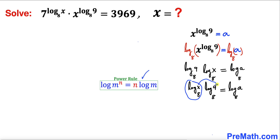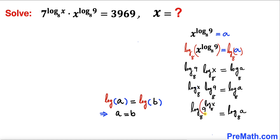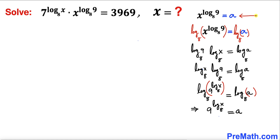Therefore we can write log of x with base 8 times log of 9 with base 8 equals log of a with base 8. Now let's recall the power rule once again — this part we can make into an exponent and bring it over to 9, so we write log base 8 of 9 to the power log of x with base 8 equals log of a with base 8. Applying the logarithmic property, 9 to the power log of x with base 8 equals simply a.